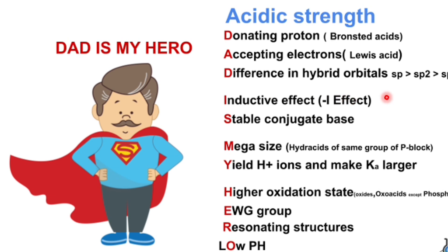D is difference in hybrid orbitals. That means SP hybridized orbital has more acidic strength when compared to SP2 and SP3 hybridized orbitals.